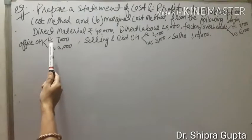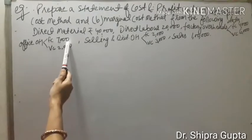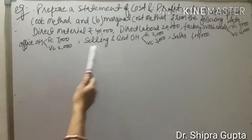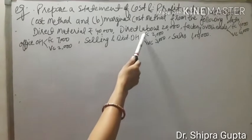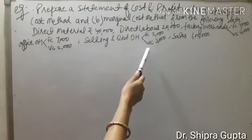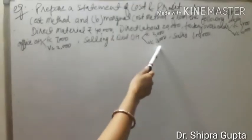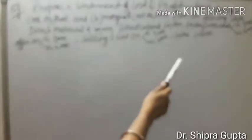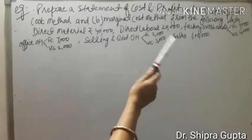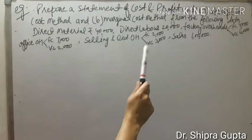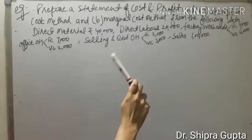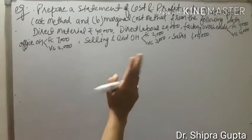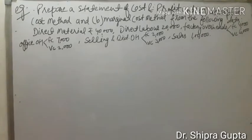Office overheads: fixed cost Rs. 7,000 and variable cost Rs. 2,000. Sales is given as Rs. 1,00,000. Now we will calculate profit and cost as per both methods — absorption cost method and marginal cost method.